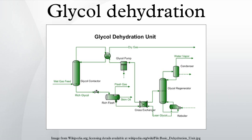Glycol dehydration is a liquid desiccant system for the removal of water from natural gas and natural gas liquids. It is the most common and economical means of water removal from these streams. Glycols typically seen in industry include triethylene glycol, diethylene glycol, ethylene glycol, and tetraethylene glycol. TEG is the most commonly used glycol in industry.